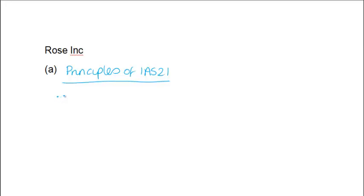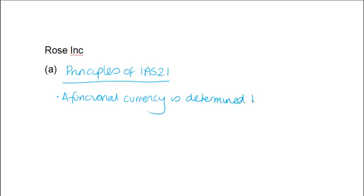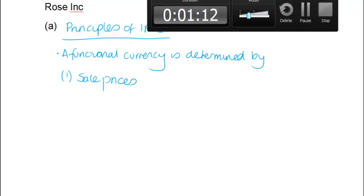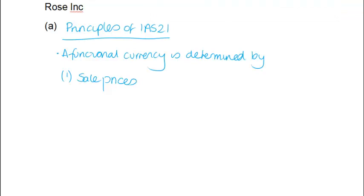I'm going to split the question into two. We're going to look at the theory first. Functional currencies are related to some broad issues, the first of which is in relation to sales prices. The important thing when dealing with a question of this nature is to break the written part of your answer down into as many smaller components as you can and deal with them in bite-sized chunks. The first thing we've got is sales prices which are being determined in DINAS, and because they're determined in DINAS, that's the local currency of STEM.